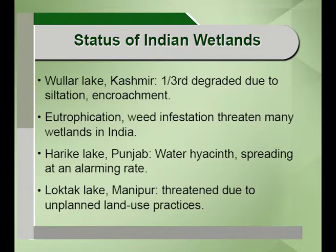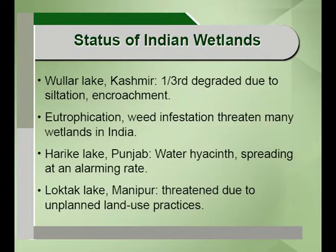Eutrophication occurs when water is highly enriched with nitrogen and phosphorus nutrients. Water hyacinths and other weeds take up all the oxygen present in the water, reducing dissolved oxygen content so that flora and fauna cannot flourish. The toxins released by these water hyacinths can even kill plant and animal species. The Harike Lake in Punjab and the Loktak Lake in Manipur — one of the largest lakes in the northeast — are also threatened due to unplanned land use and slash-and-burn practices where the fumdis are being burnt for agriculture.